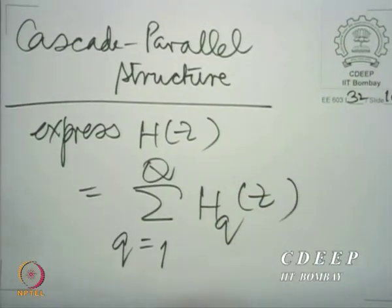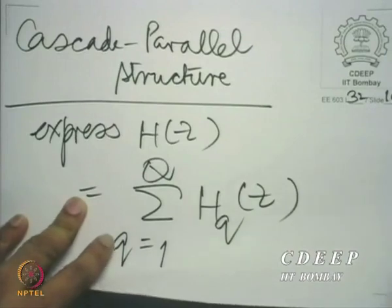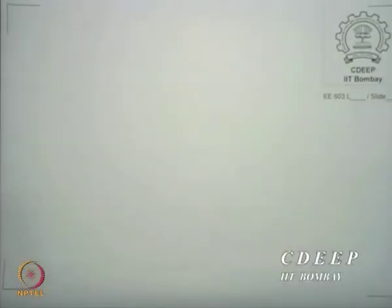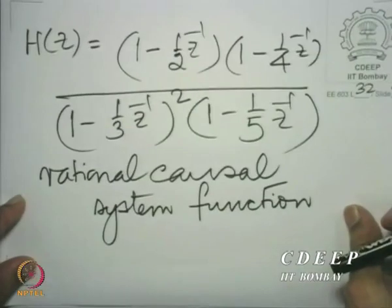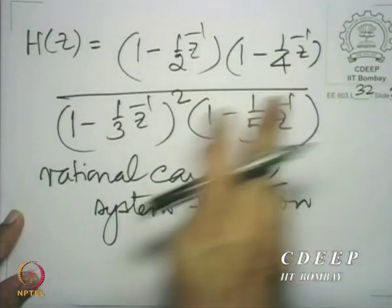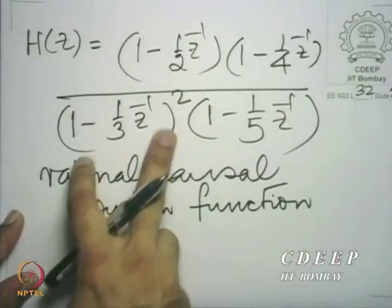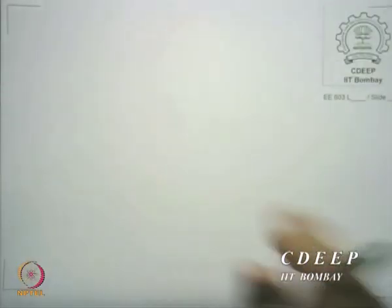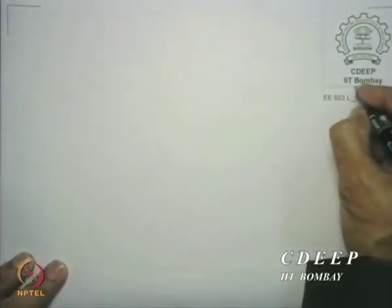Now one way to do this—let us take the same system function again. H(z) is 1 minus half z inverse into 1 minus 1 fourth z inverse, times 1 minus 1 third z inverse squared into 1 minus 1 fifth z inverse. Let us try and see in what ways we can decompose this as a sum.